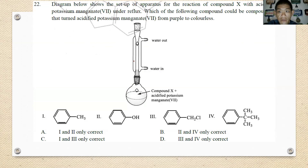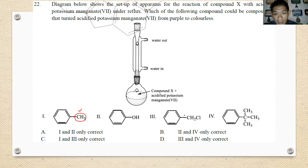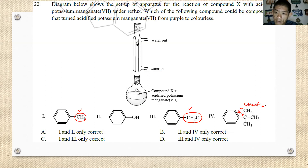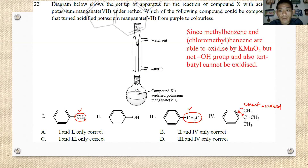Number twenty-two: which compound turns acidified potassium manganate from purple to colourless? To decolorize KMnO4, an aromatic compound must have a benzylic group or be an alkyl benzene. For example, CH3 or CH2CH3 attached to the ring gives a positive test. However, a quaternary carbon cannot undergo oxidation and will not decolorize the purple colour. The answer is compounds 1 and 3 only.